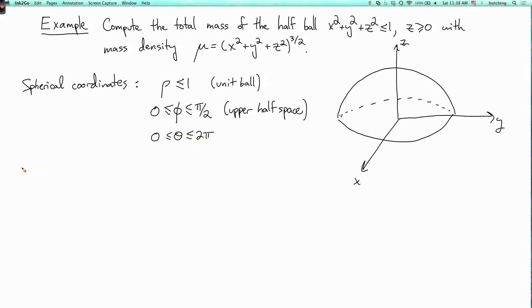Okay, so the mass that we want to calculate is the integral as phi goes from 0 to pi over 2, theta goes from 0 to 2 pi, and rho goes from 0 to 1.